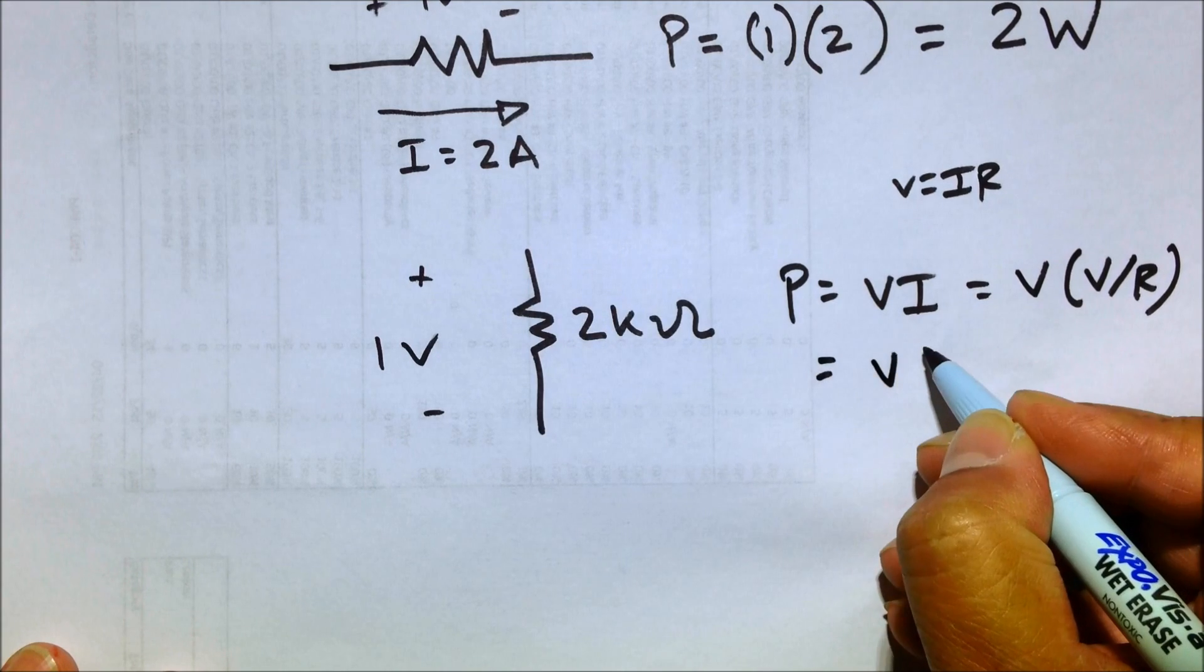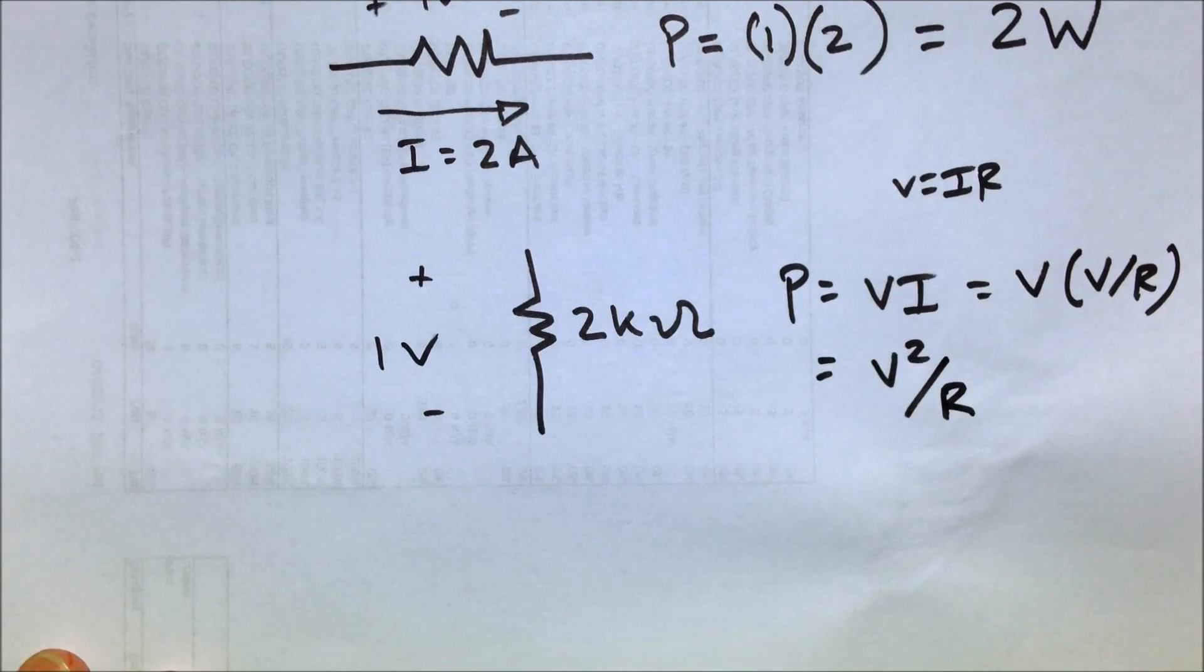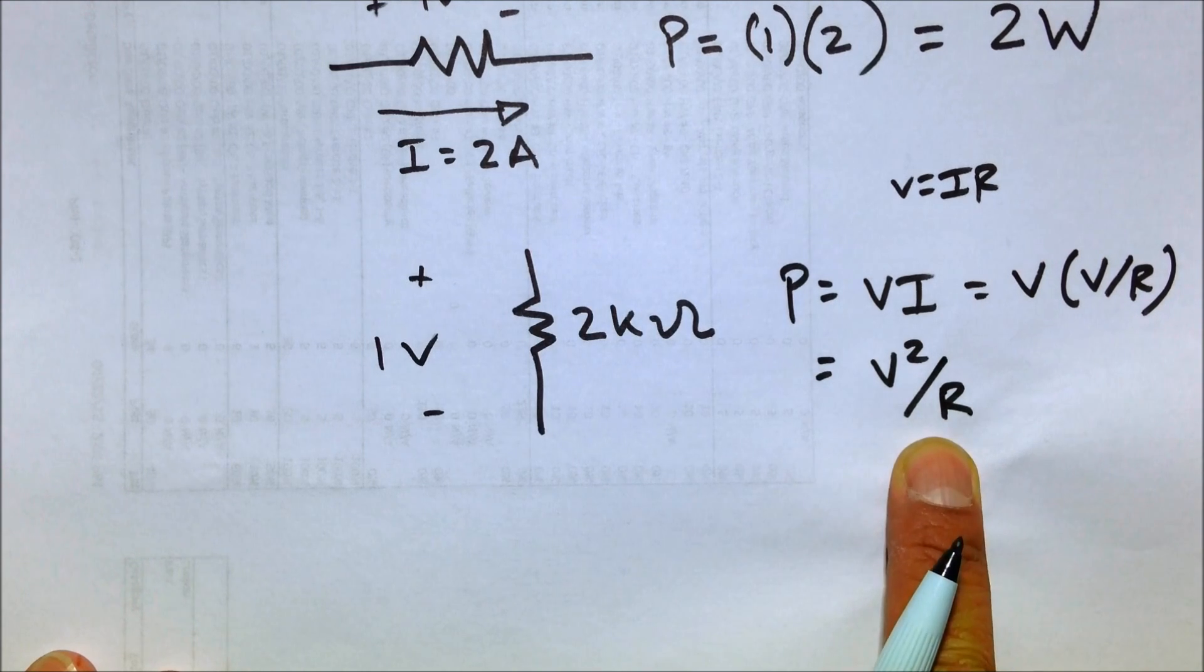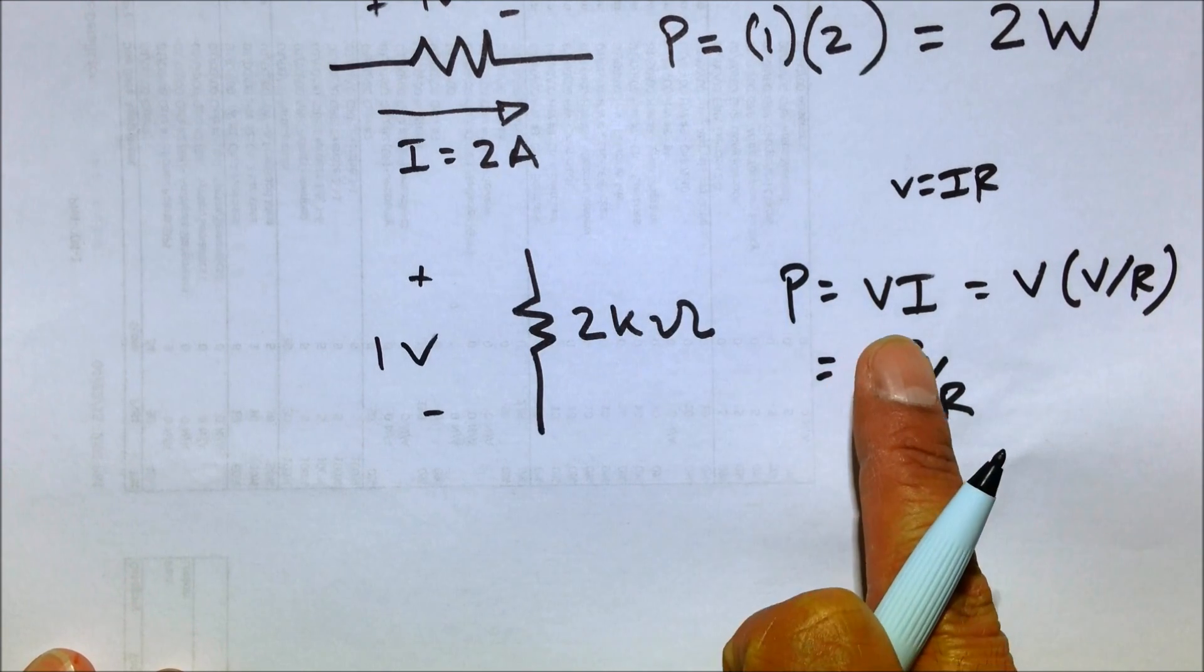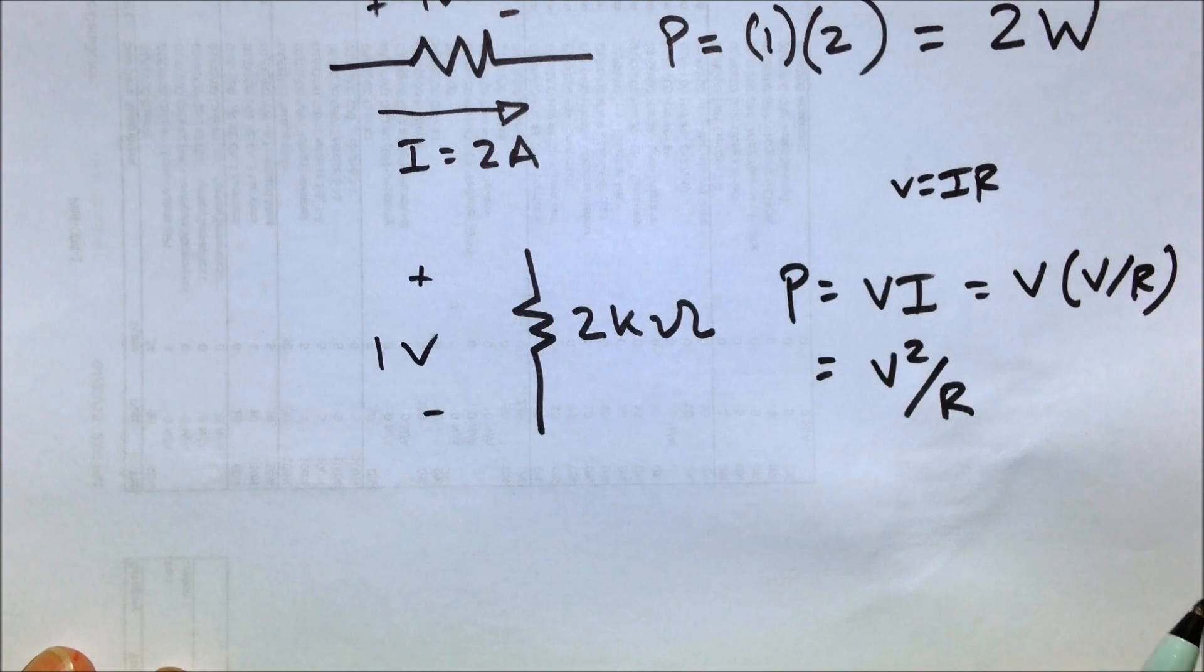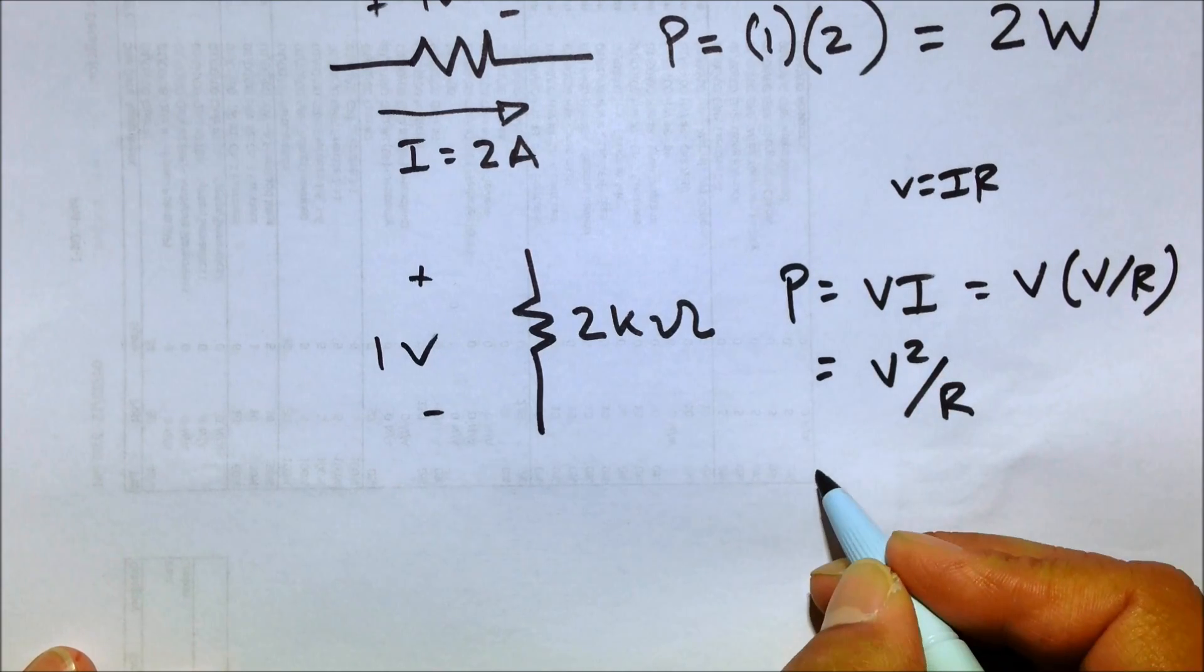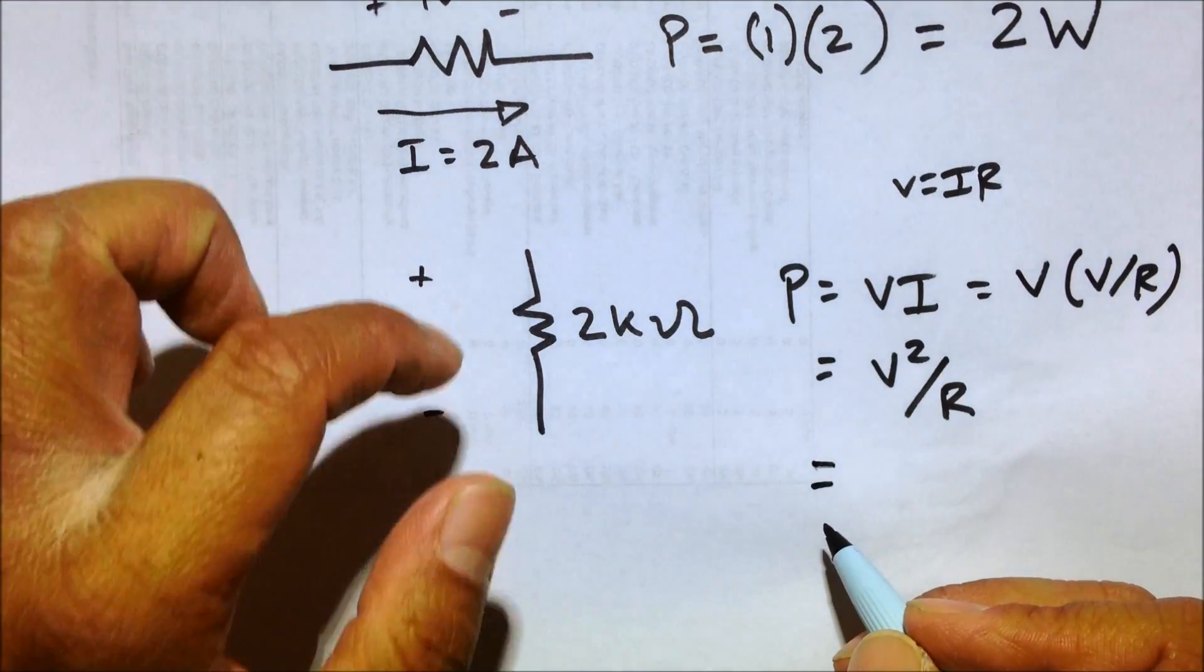Well now we have a different equation for power, V squared divided by R. Which is an equation you can memorize if you wanted to, or you can just remember P equals V times I and just don't forget Ohm's law, which is a good thing not to forget. So now with our new equation for power, we can solve for the power consumed by that resistor.